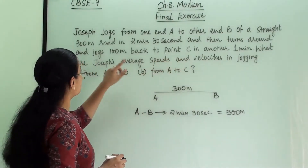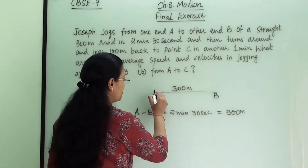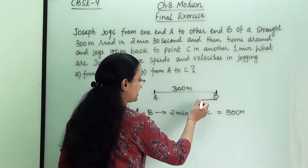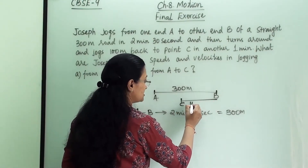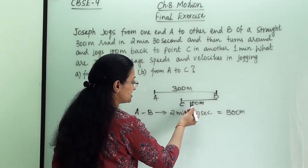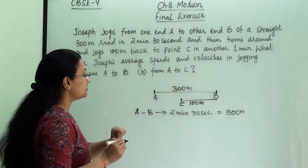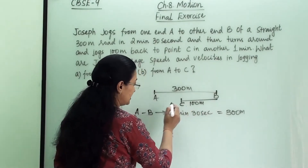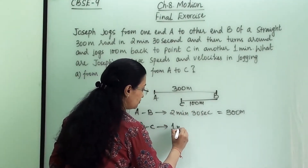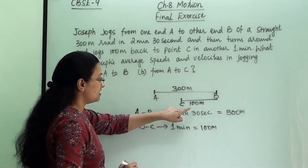Then he turns around and jogs 100 meters back to point C. So this is point A, this is point B, and from B he comes back till point C — that is 100 meters. From B to C he takes one minute and that distance is 100 meters.